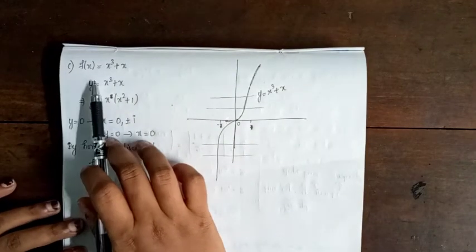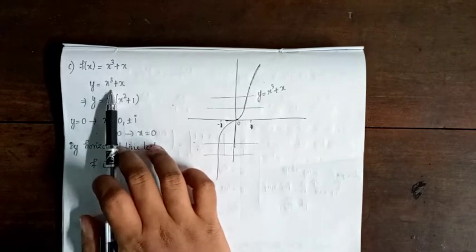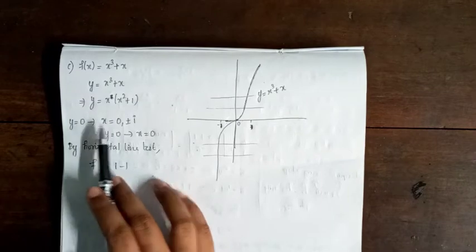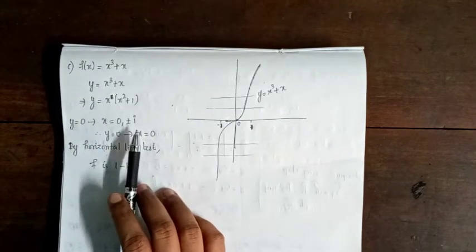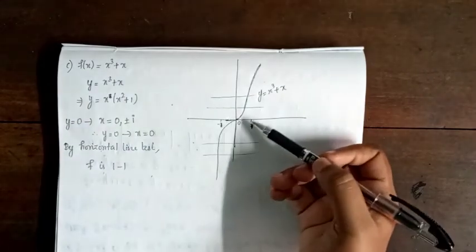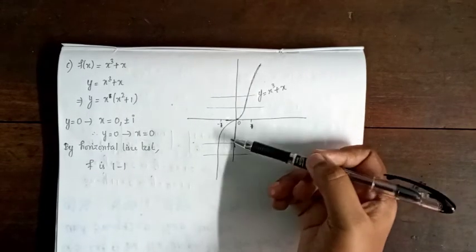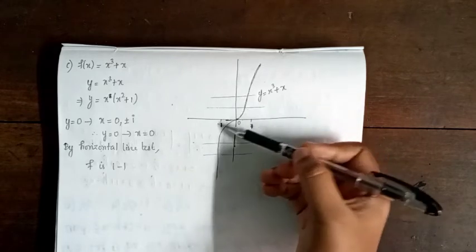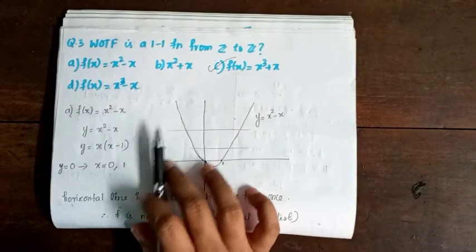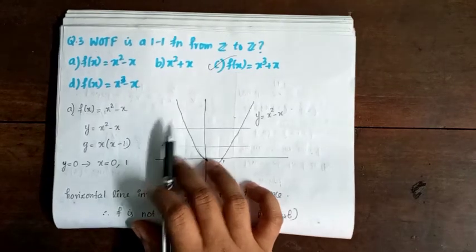Now we have option C: f(x) = x³ + x. Let y = x³ + x, which can be written as y = x(x² + 1). Since x² + 1 is always positive, y = 0 only when x = 0. Plotting this graph and applying the horizontal line test, every horizontal line touches the graph exactly once. Therefore, by the horizontal line test, option C is a 1-1 function.